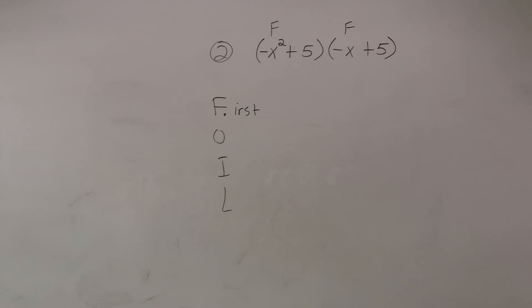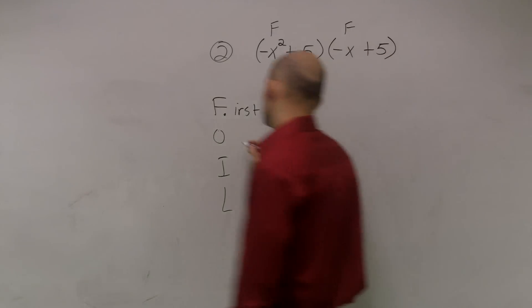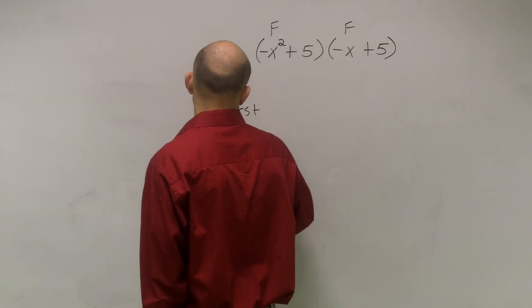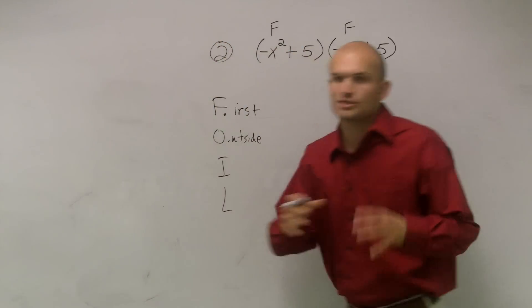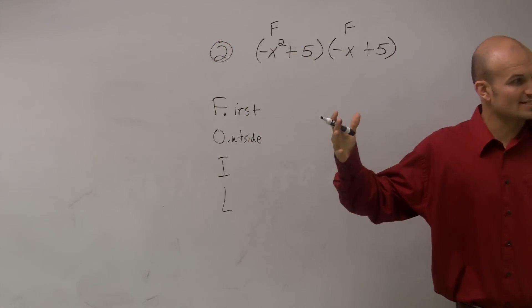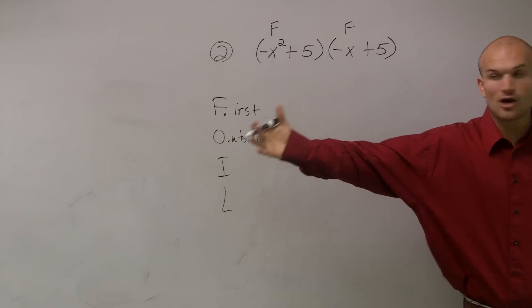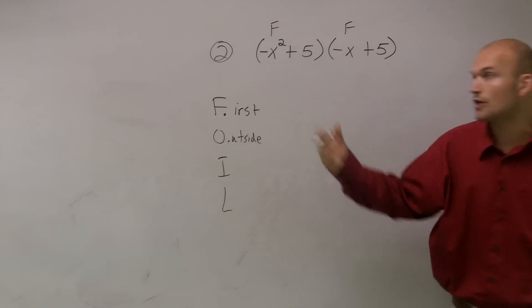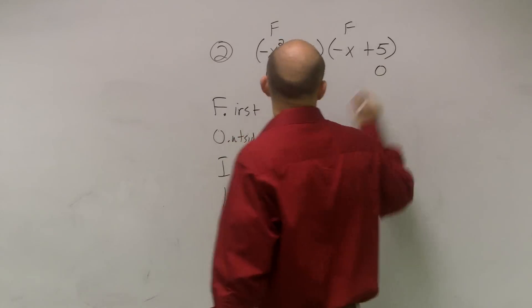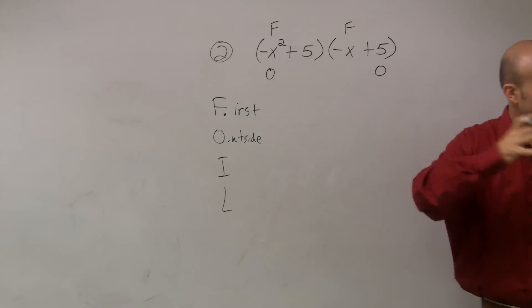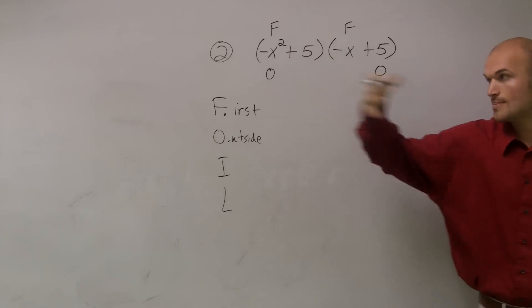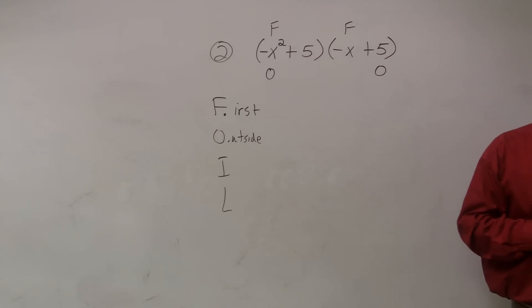O represents outer, or I just like to call it outside terms. So if you look at your binomial, if you look at this expression as a whole, the farther outside terms, or the farther outer terms, are going to be x squared and 5. Those are on the outer edges. So that's why those are going to be called my outside terms.